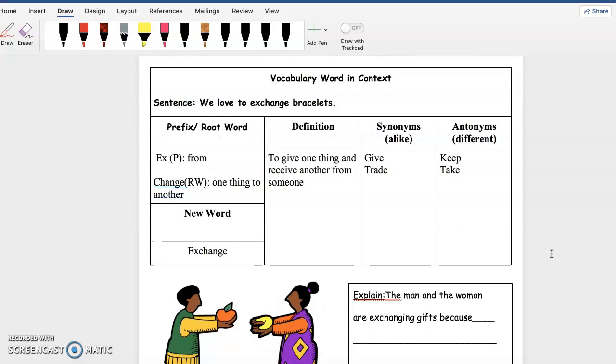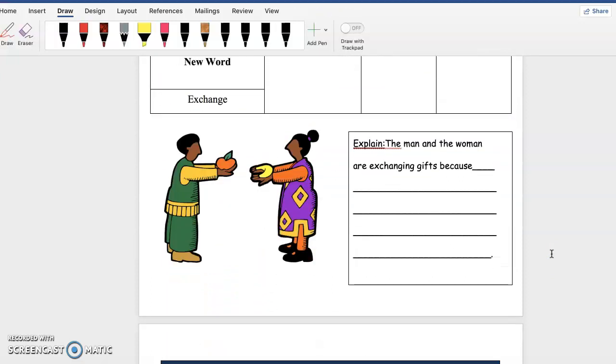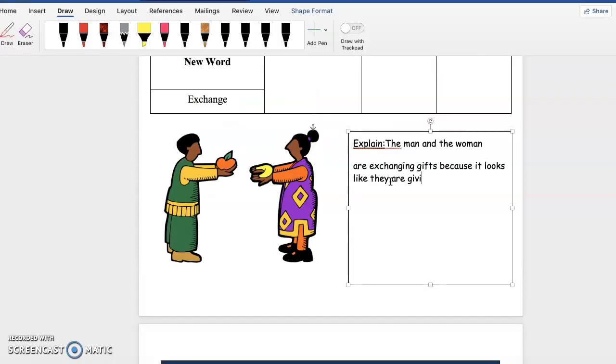Alright, now let's go ahead and look at our image. So we can see that the man and the woman both have fruit in their hands, and it looks like they're extending it out and they're giving it to one another. So how do we know that the man and the woman are exchanging gifts? Because it looks like they are giving and receiving from one another.